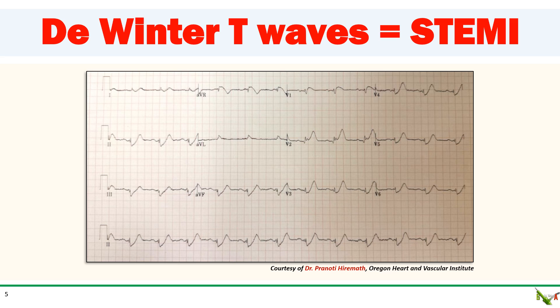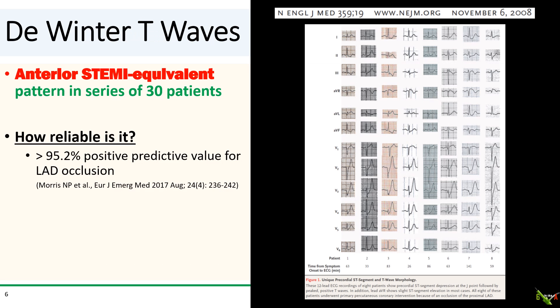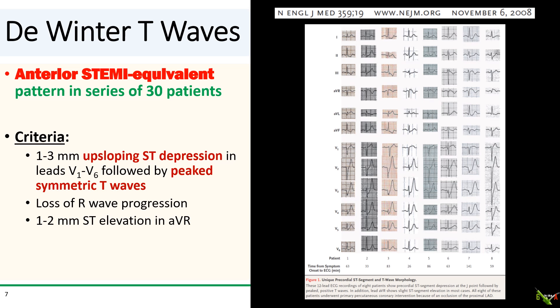These T-wave changes across the precordium are known as DeWinter T-waves and are considered to be equivalent to an anterior STEMI. Robert DeWinter and his colleagues first described this pattern in a case series of 30 patients in 2008. It's quite reliable for predicting LAD occlusion with a positive predictive value of more than 95%. Classically, you see one to three millimeter upsloping ST depressions in leads V1 to V6, followed by symmetric tall peaked T-waves, usually with poor R-wave progression, and sometimes one to two millimeters of ST elevation in lead AVR.